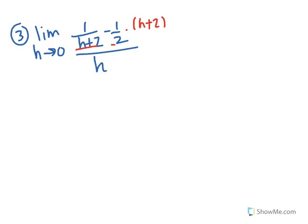The two denominators are h plus 2 and 2. This one is missing the h plus 2, and this one is missing the 2. So I'm going to multiply this term by 2 over 2 — the whole thing.